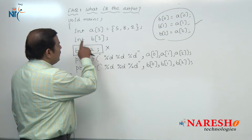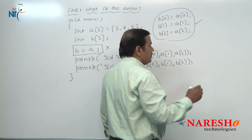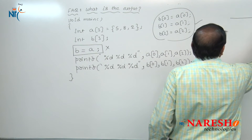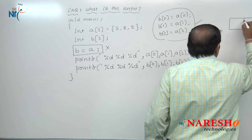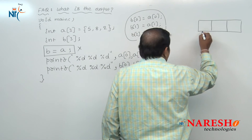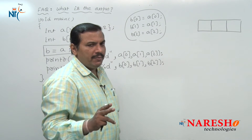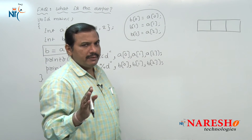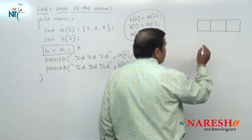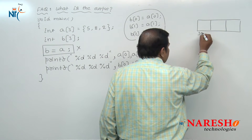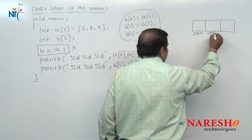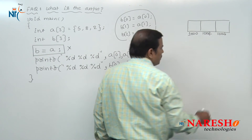The background reasoning is: when the first statement is executed for array variable A, a sequence of three contiguous memory locations are allocated. Assume that for an integer type variable, two bytes of memory is allocated. Assume that the address of the first memory location is 1000, the second is 1002, and the third is 1004.